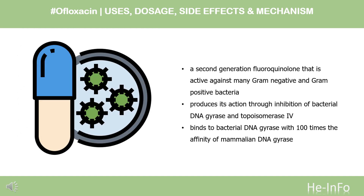Pharmacodynamics. Ofloxacin is a quinolone/fluoroquinolone antibiotic. Ofloxacin is bactericidal and its mode of action depends on blocking bacterial DNA replication by binding itself to an enzyme called DNA gyrase, which allows the untwisting required to replicate one DNA double helix into two. Notably, the drug has 100 times higher affinity for bacterial DNA gyrase than for mammalian. Ofloxacin is a broad-spectrum antibiotic that is active against both gram-positive and gram-negative bacteria.